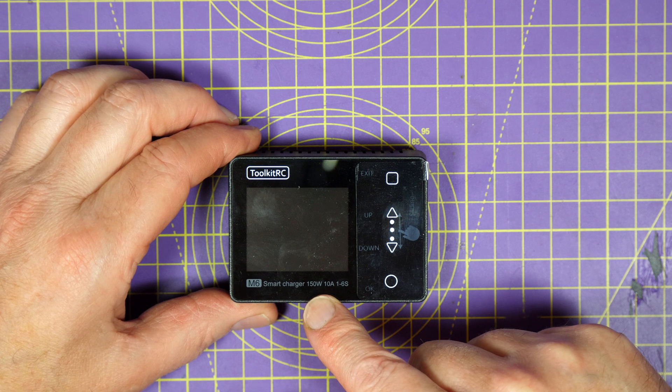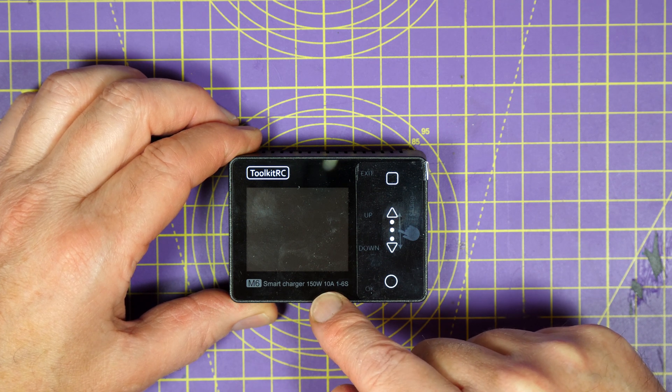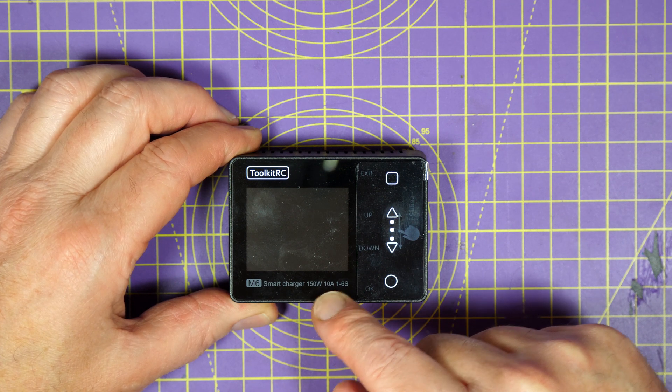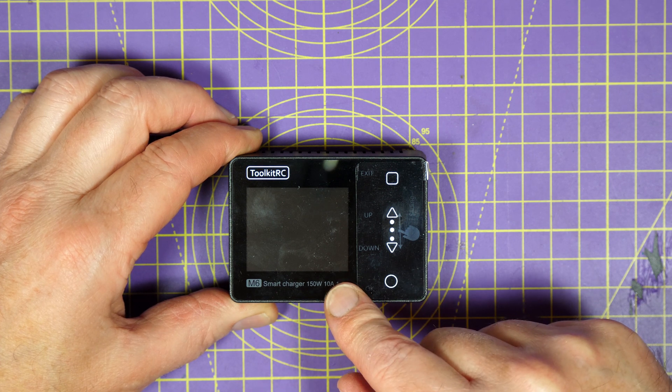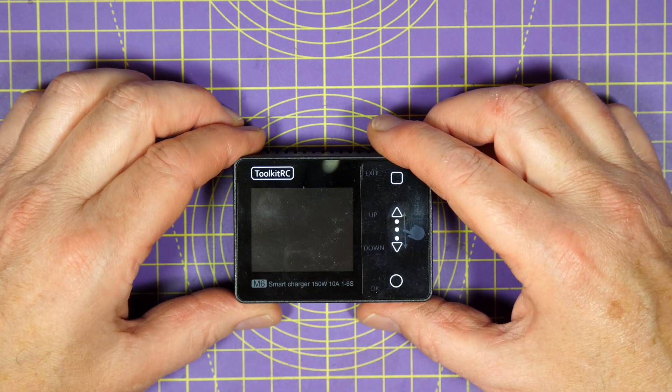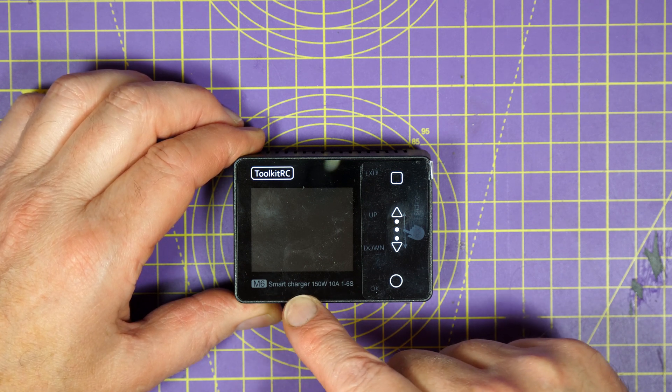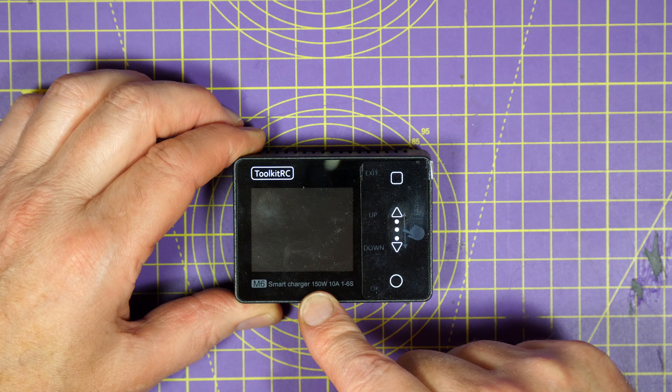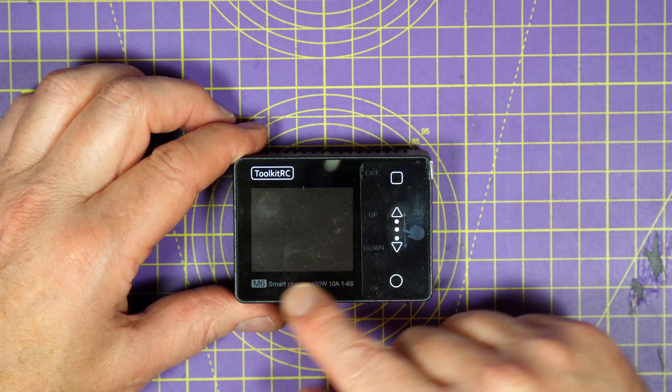Other than the balance port electronics, this V2 version is exactly the same as the original M6 Smart Charger. And that's been reviewed loads of times, so I won't go over it in massive detail. But what you get with this is a 150W charger that's capable of charging 2 to 6S batteries of all the usual chemistries: LiPo, HV LiPos, Lithium-Ion and so on.